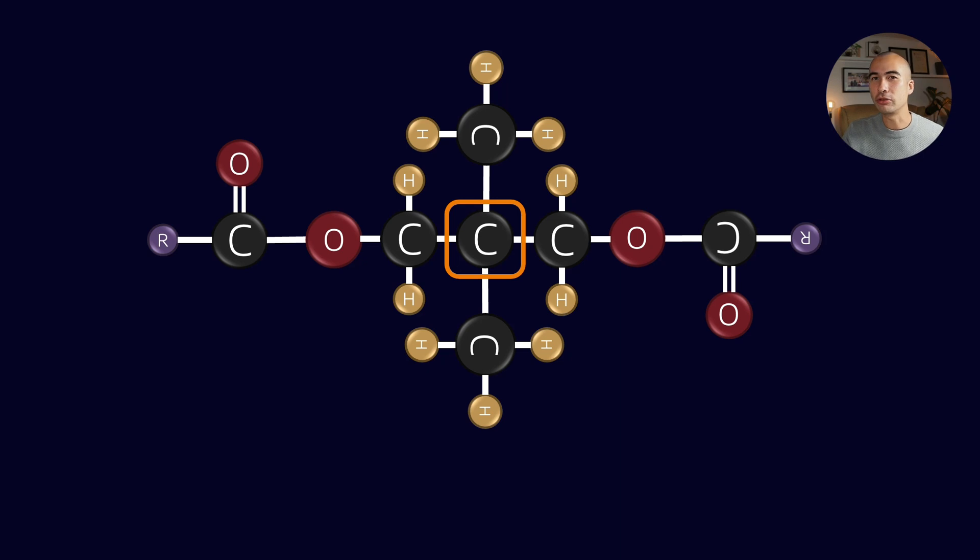For reasons we're not going to go into in this video, beta hydrogens are susceptible to oxidative attack. As you can see in this particular molecule, the beta carbon from both sides is attached to only carbons. There are four carbons that surround it. That makes a polyol ester much more oxidatively stable than a diester, and therefore it can perform at higher temperatures.